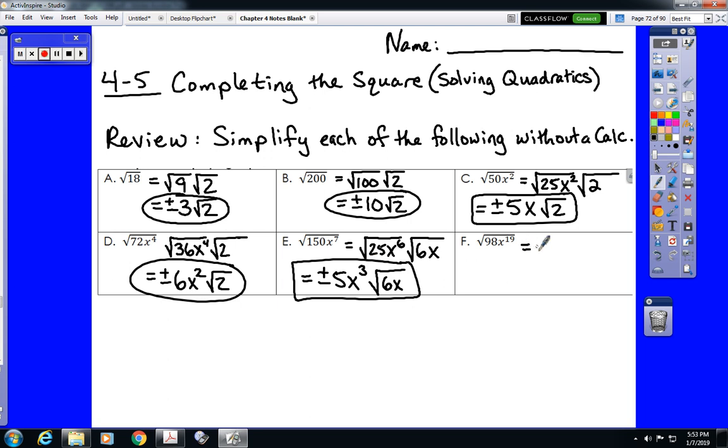One more like that. And root 98 breaks into a 49 and a 2. 19 is odd, so one of those 19 will go with the 2. The other 18 of those 19 will go with the 49. That is plus or minus 7x to the ninth, root 2x.